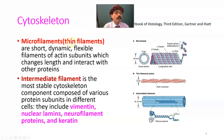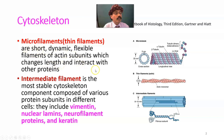Microfilaments, also called thin filaments or actin filaments, are short, dynamic, flexible filaments of actin subunits which change length and interact with other proteins — such as myosin, troponin, and tropomyosin. Here are the actin monomers.